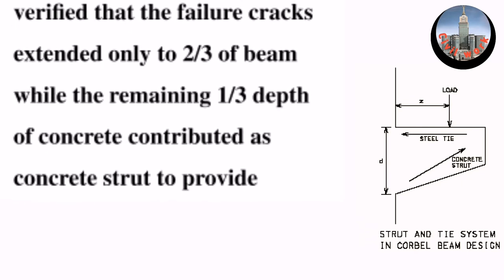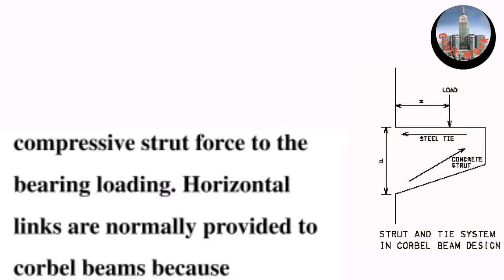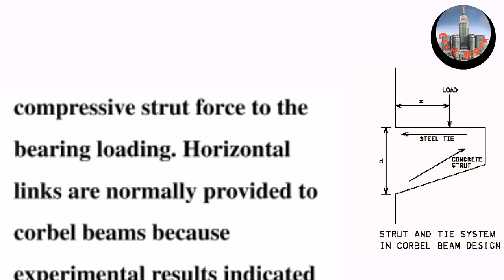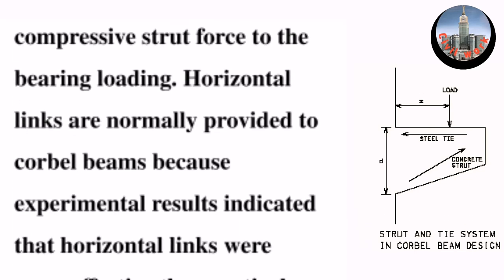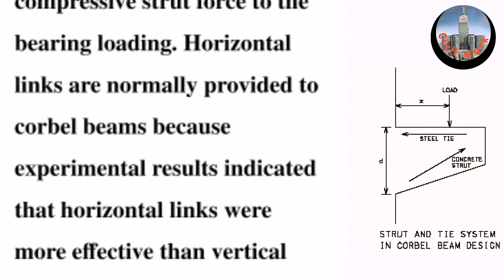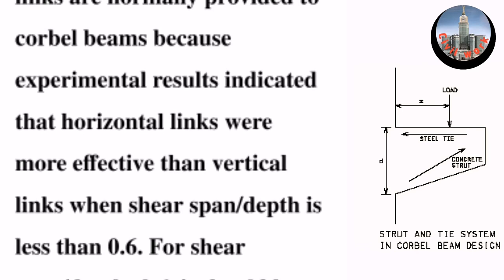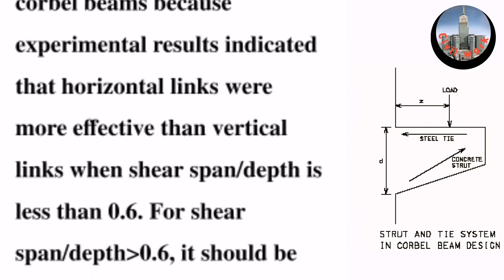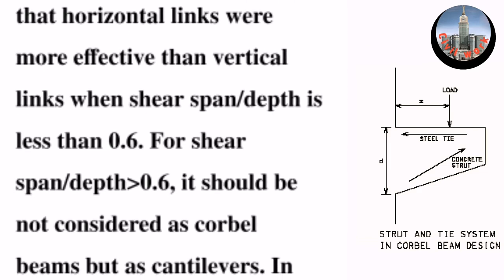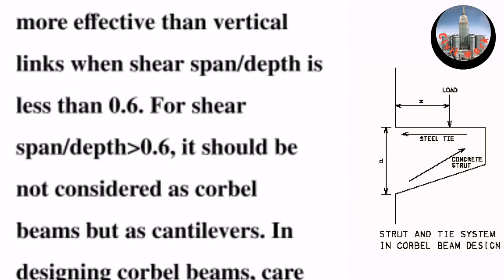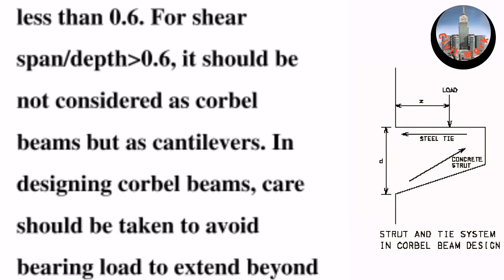Horizontal links are normally provided to corbel beams because experimental results indicated that horizontal links were more effective than vertical links when shear span/depth is less than 0.6. For shear span/depth greater than 0.6, it should not be considered as corbel beams but as cantilevers.